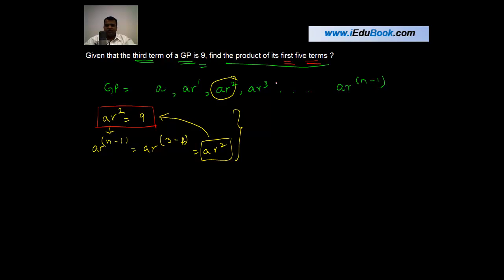You need to find out the product of the first 5 terms. So let's say these are the 4 terms, so the 4th one will be AR^4. So you have to find out the product of these 5 terms: A into AR into AR^2 into AR^3 into AR^4.